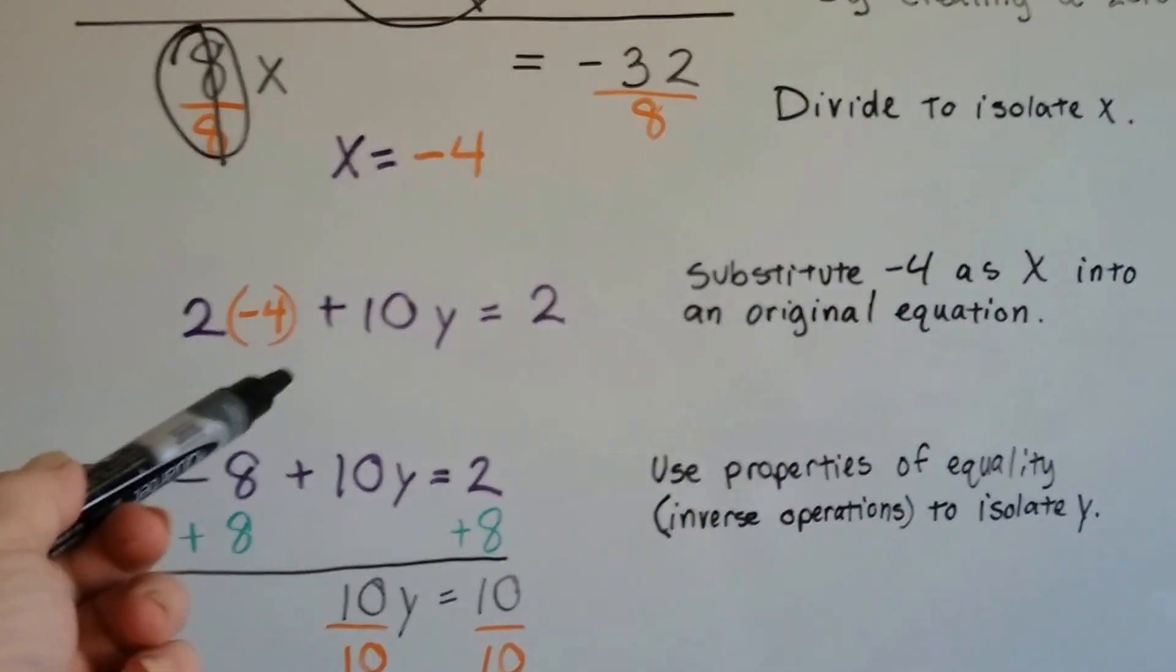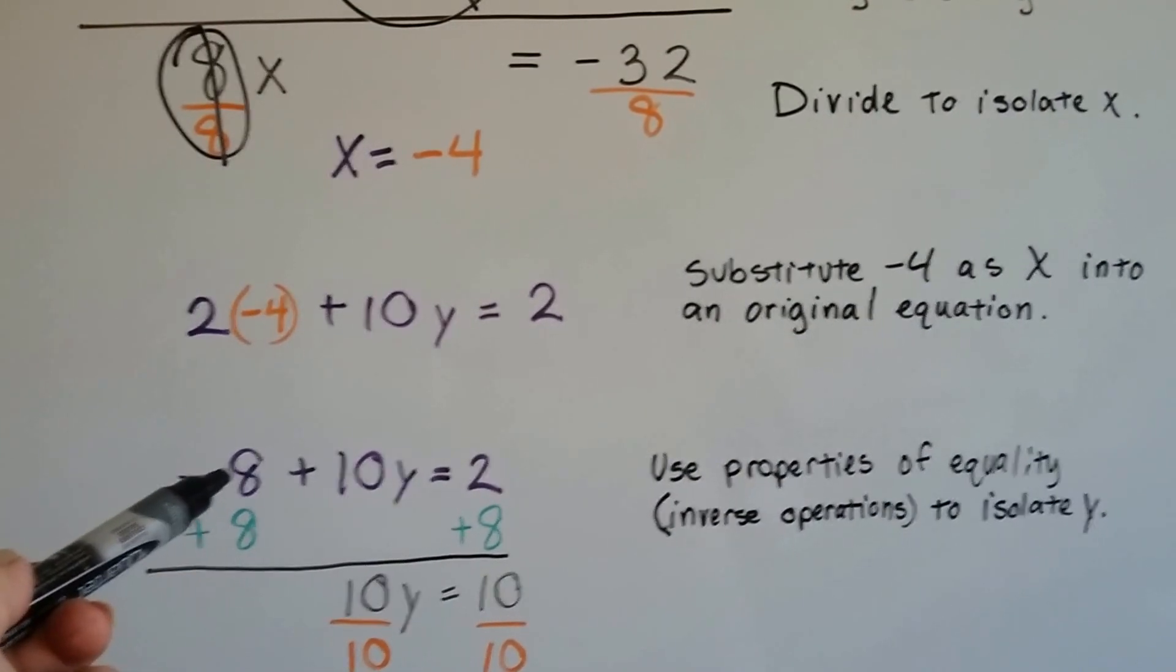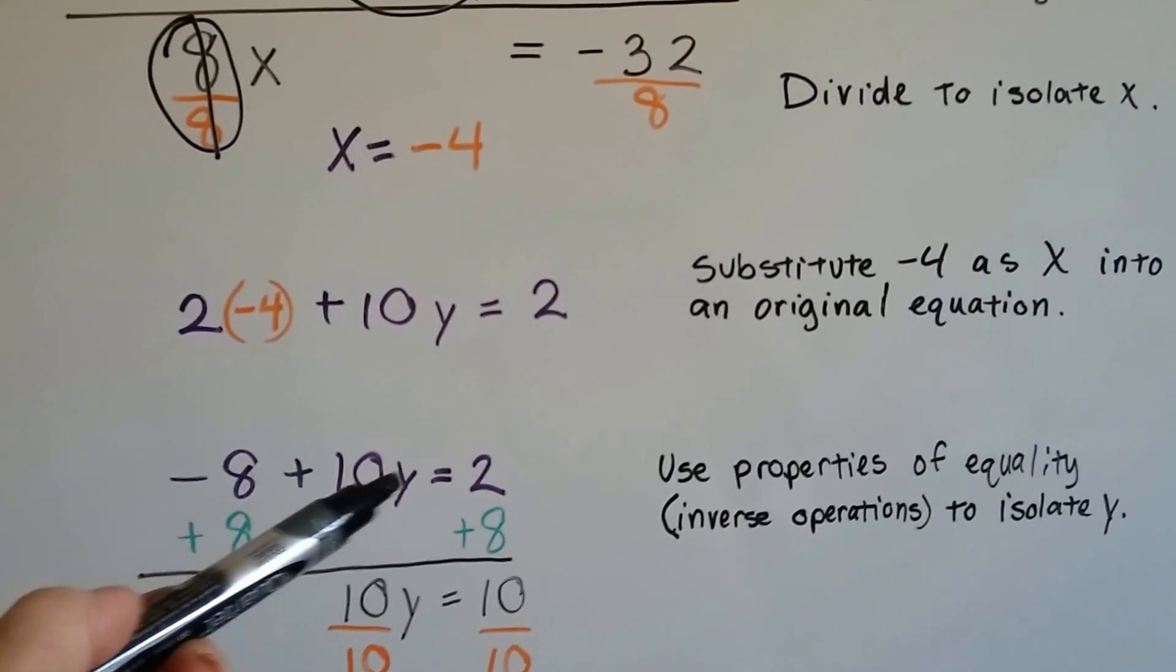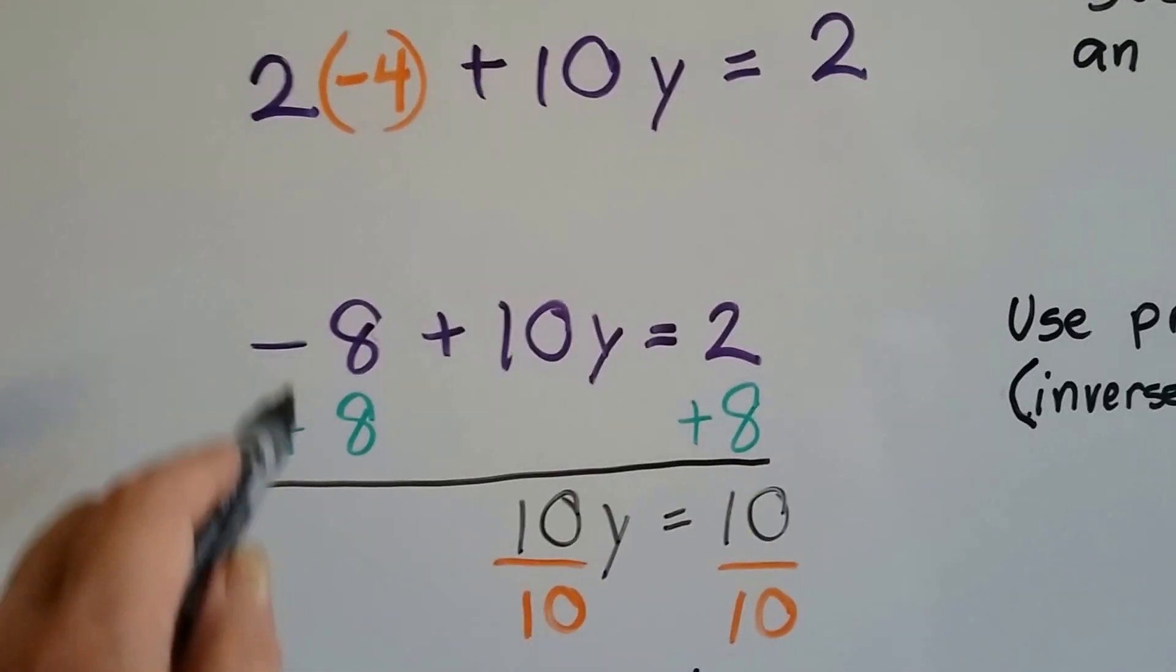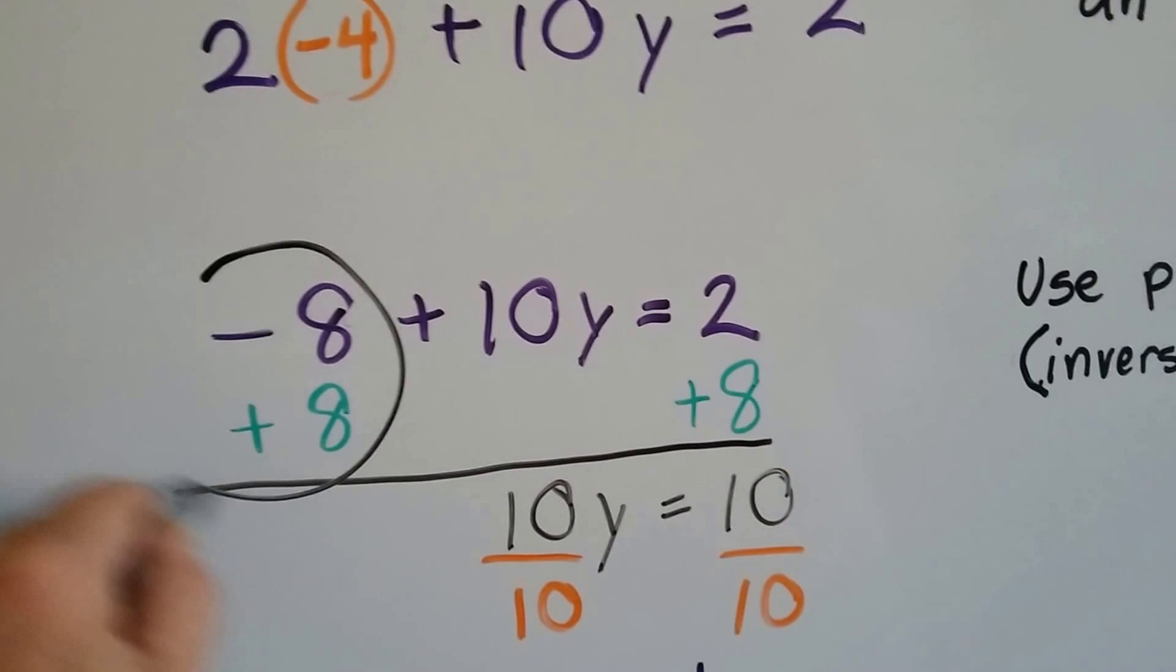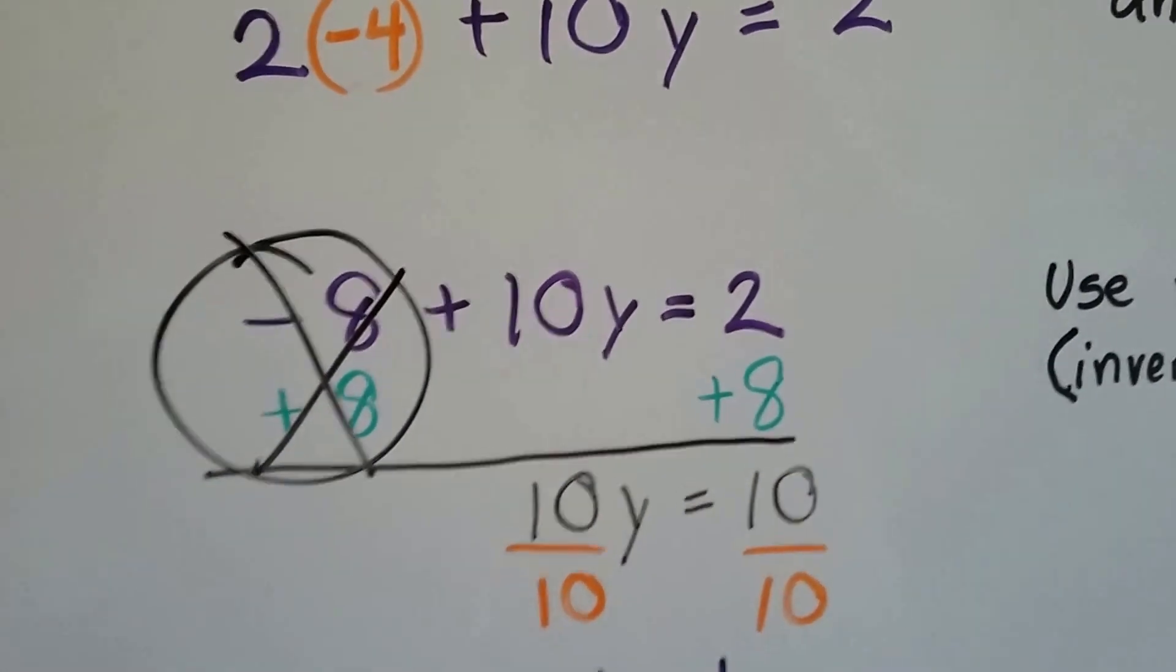So now I've got 2 times negative 4 instead of 2 times x. So 2 times negative 4 is a negative 8. Now we have negative 8 plus 10y equals 2. We add 8 to each side because that's a negative. So we add to create the zero pair. We eliminate that 8.